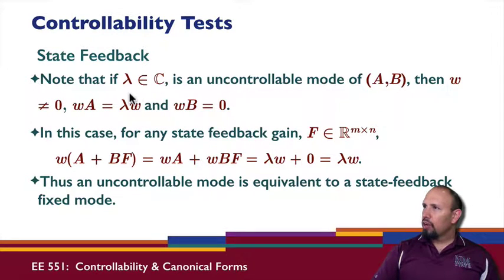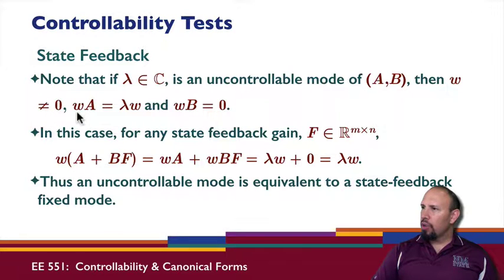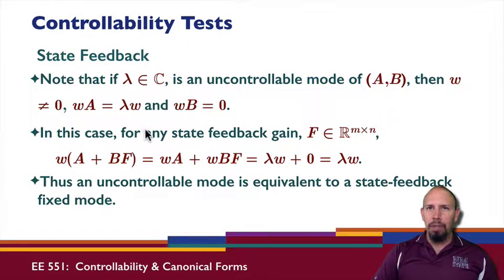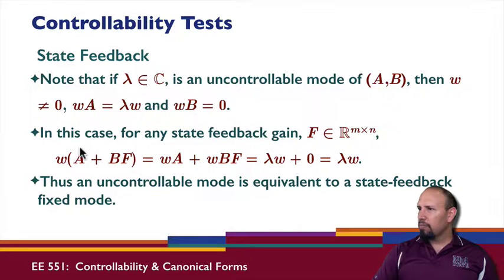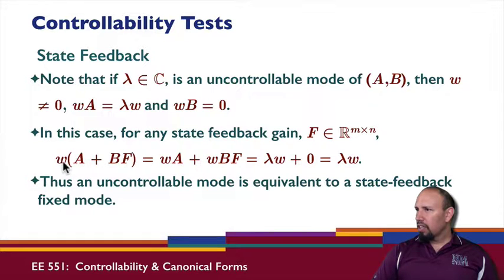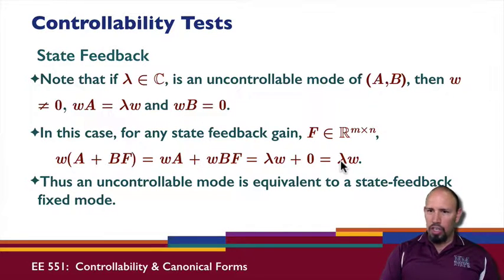If lambda is an uncontrollable mode of AB, then W is nonzero, WA = λW, and WB = 0. Looking at the state feedback problem, W(A + BF) = WA + WBF = λW + 0 = λW, which means W is a left eigenvector of A + BF. This shows that an uncontrollable mode is equivalent to a state feedback fixed mode — regardless of F, the matrix A + BF will always have an eigenvalue at lambda.